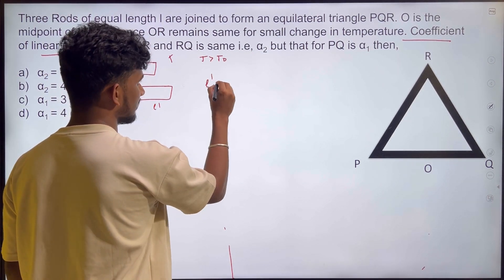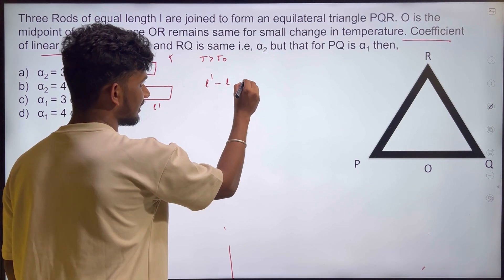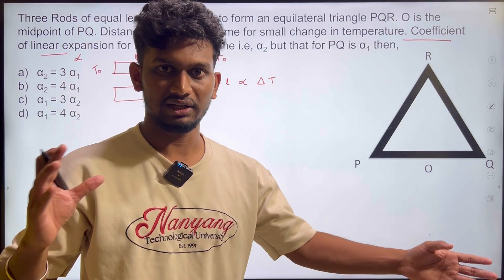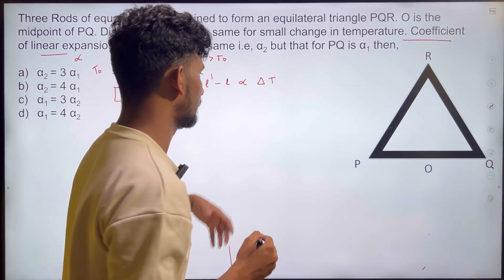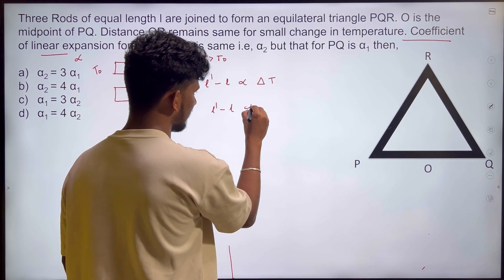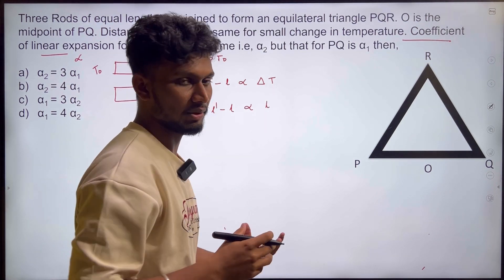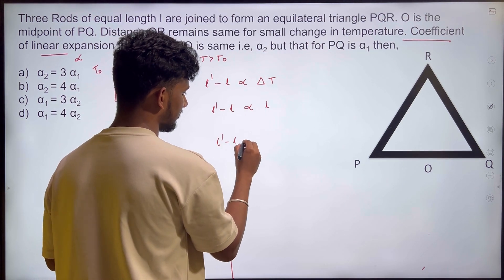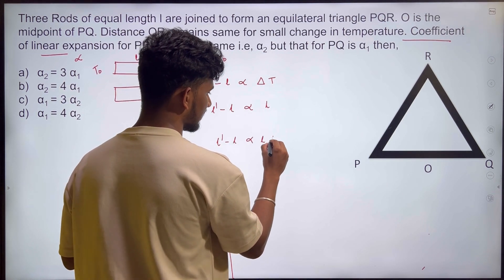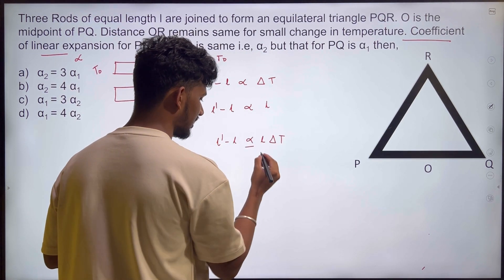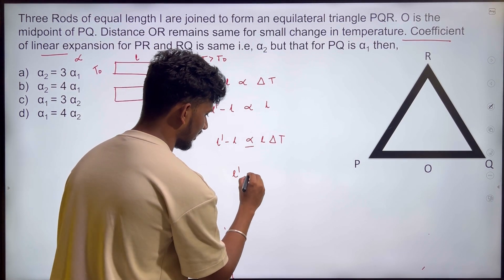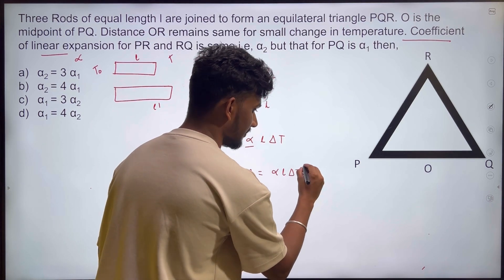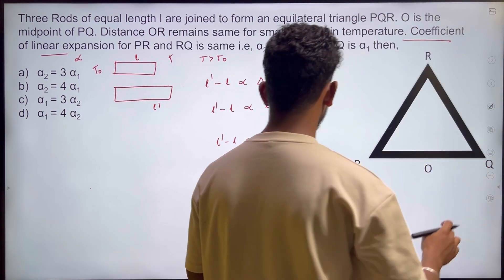L' is the new length, L is the old length. The change in length is proportional to the change in temperature, and it also has to be proportional to the original length L. So the proportionality constant is alpha, the coefficient of thermal expansion.